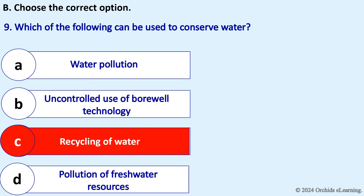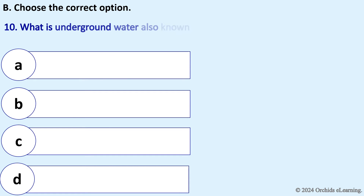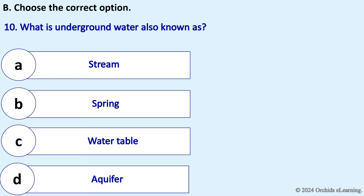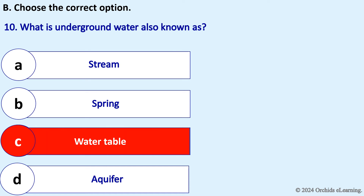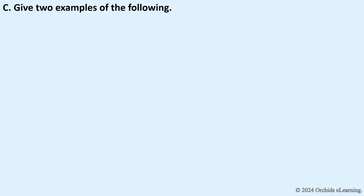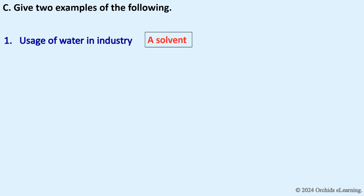Which of the following can be used to conserve water? Answer: Recycling of water. What is underground water also known as? Answer: The water table.